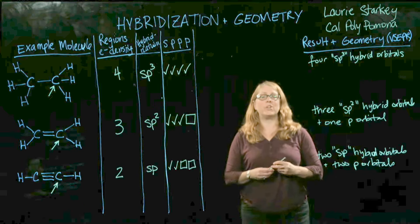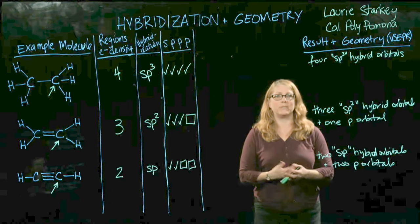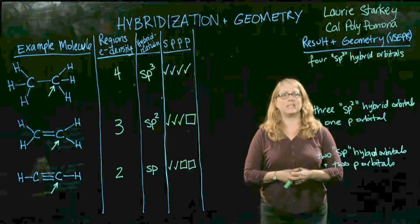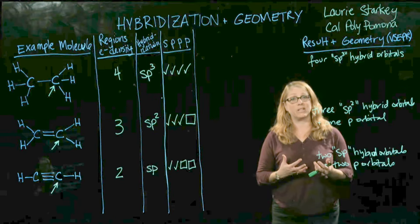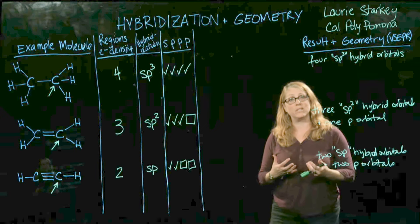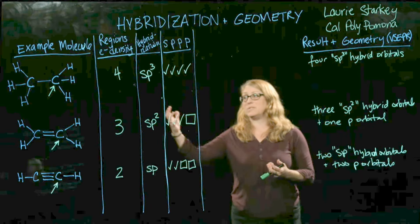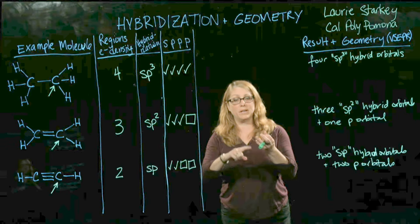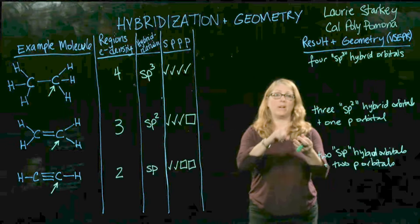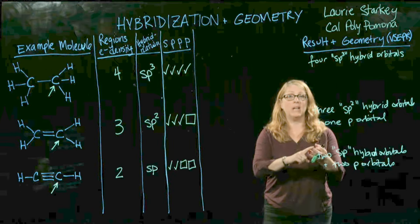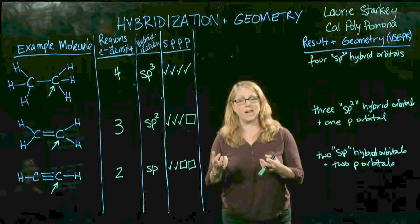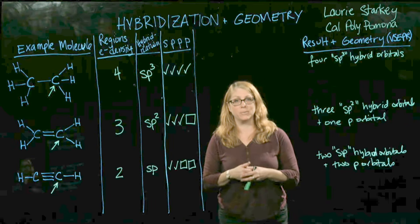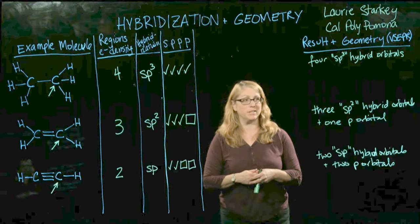So determining hybridization for an atom is simply a matter of counting up the regions of electron density. Those regions can be, as we've seen, a single bond, a double bond, or a triple bond. It could also be a lone pair of electrons — that counts as a region of electron density as well.